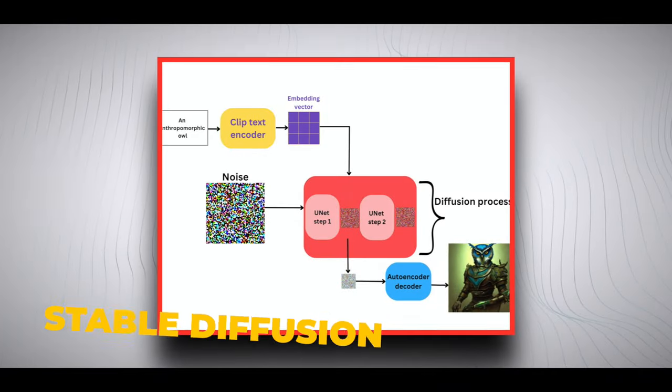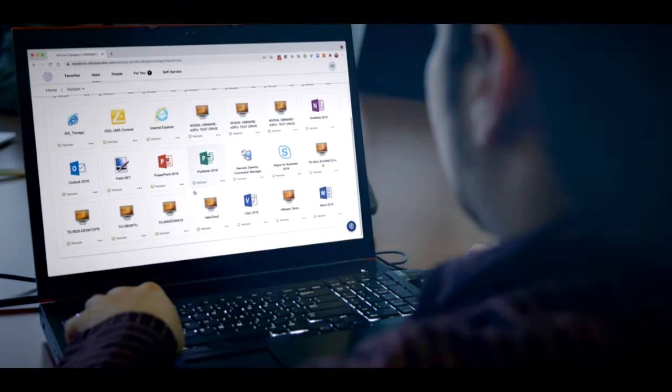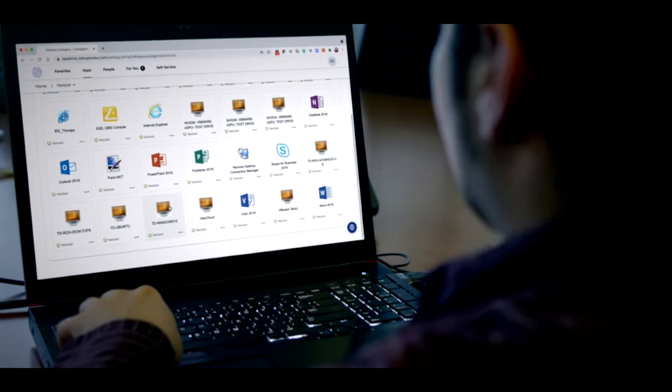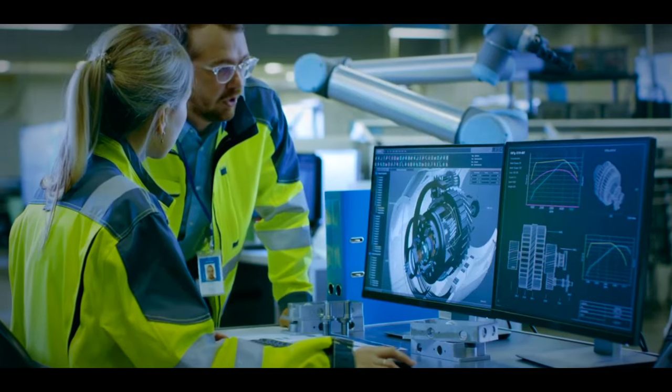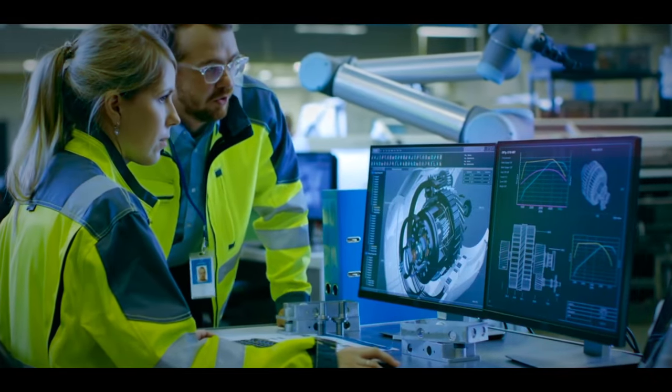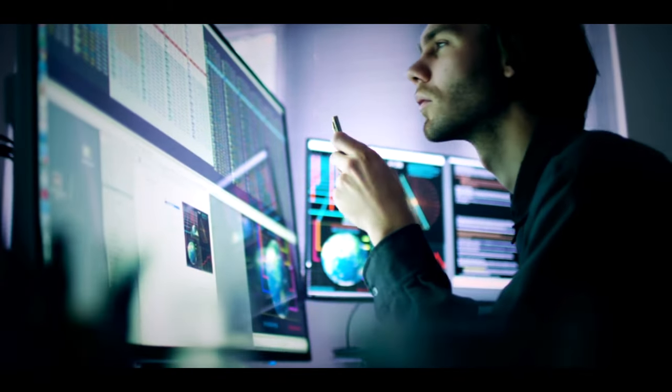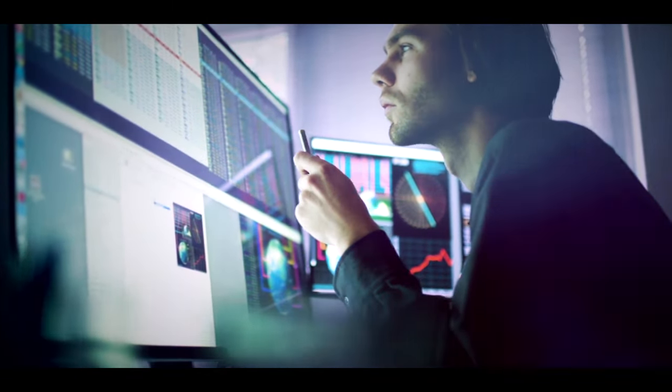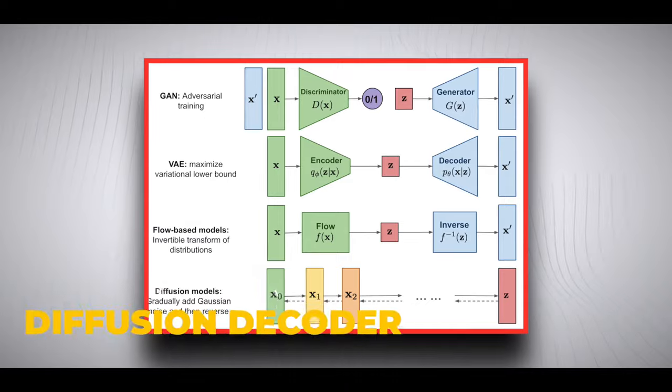Stable diffusion, another pivotal component, plays a transformative role in the generation process. It begins at the foundation of random visual noise and systematically refines it, step by step, until it comes together in a detailed 3D shape.